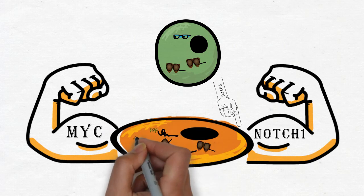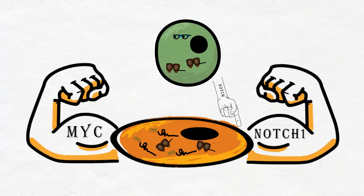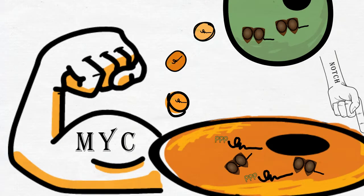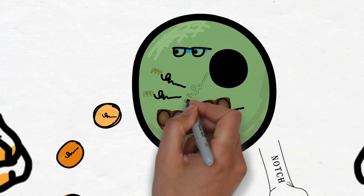In contrast, the levels of the protein shields, SRP9 and 14, remain constant. This allows unshielded 7SL to be secreted out in exosomes and delivered to the cancer cells as a potent activator of RIG-I.